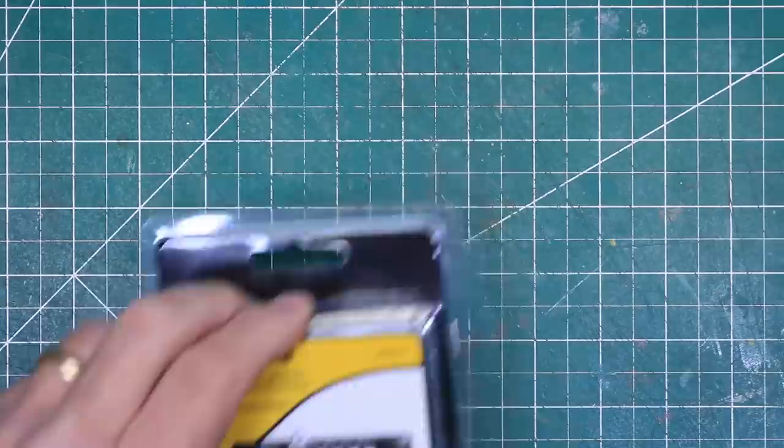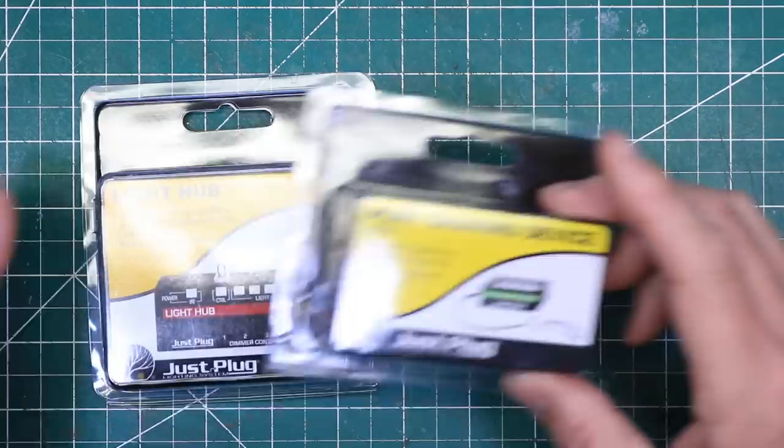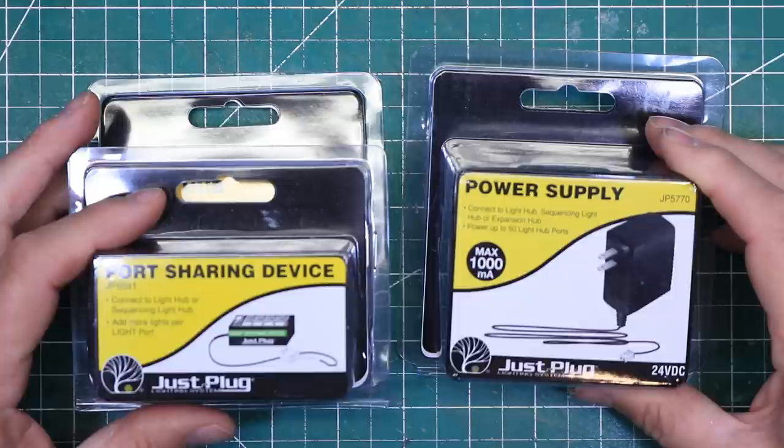To light the 10 LEDs without modification, you will need one light hub, three port sharing devices, and one power supply. I decided it would be fun to have some of the lights turn on and off to create a sense of action and life in the structure,